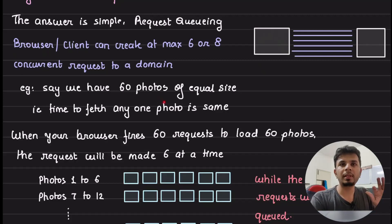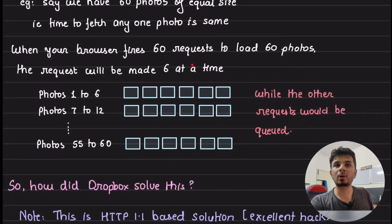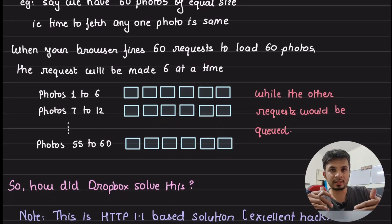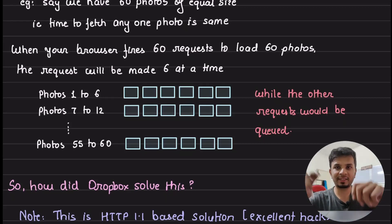For example, let's say we have 60 photos of equal size and time to fetch one photo or any photo is exactly the same. So when your browser fires, now let's say you are rendering that, you got 60 image URLs. And you are loading it in the img tag. What would happen is, your browser would make 60 requests, one for each img tag, to get the photo.